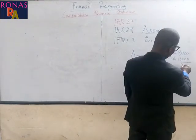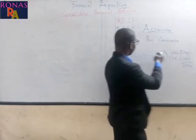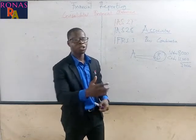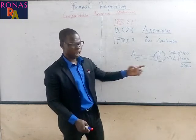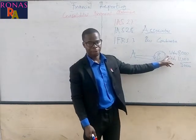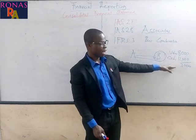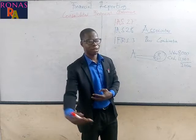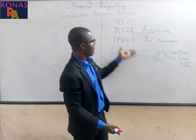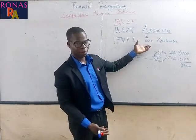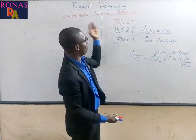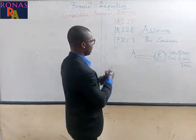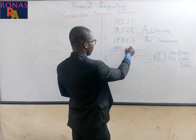So we have 3,000 of goodwill. IFRS 3 on business combination deals with how we should treat that goodwill. Sometimes the issue will be vice versa, and if it is vice versa, we have the concept of what we call gain on bargain purchase. How will you deal with it? IFRS 3 handles that. This is very important when it comes to consolidated financial statements. The next standard is IFRS 10 — consolidated financial statements.